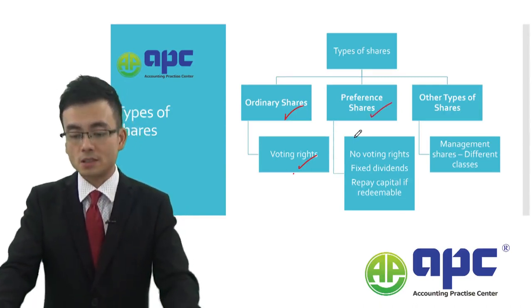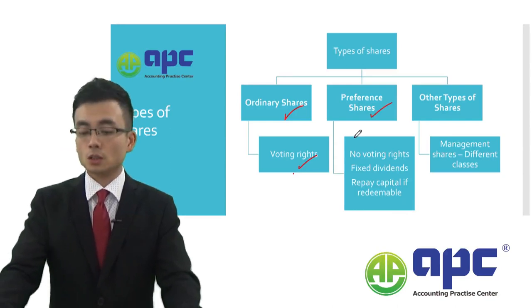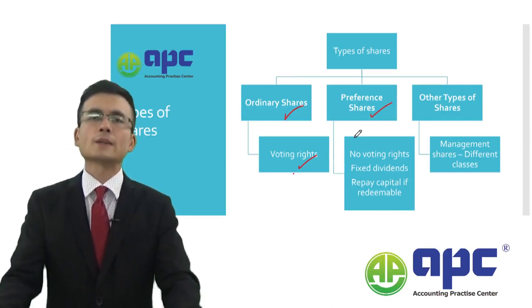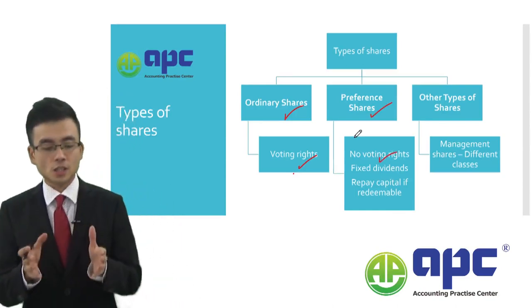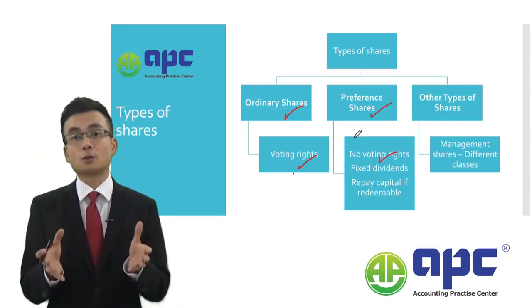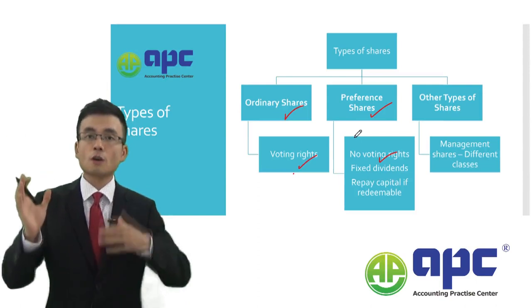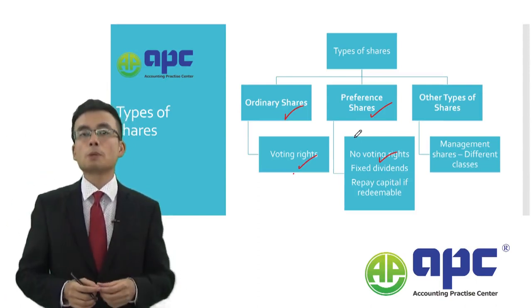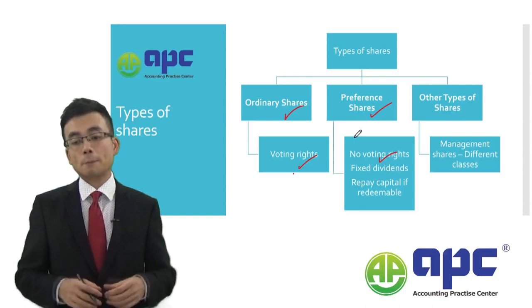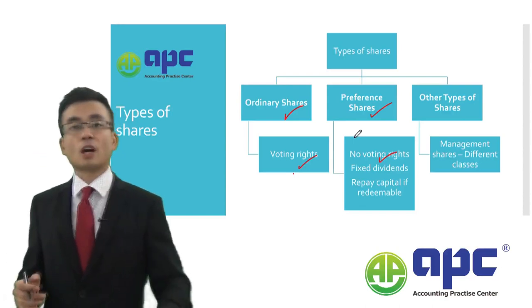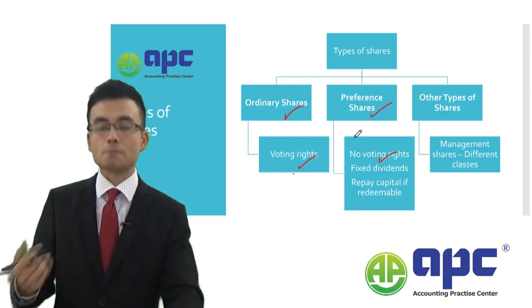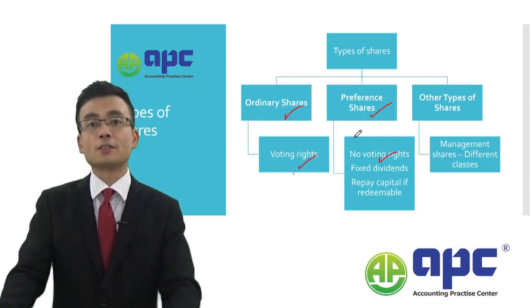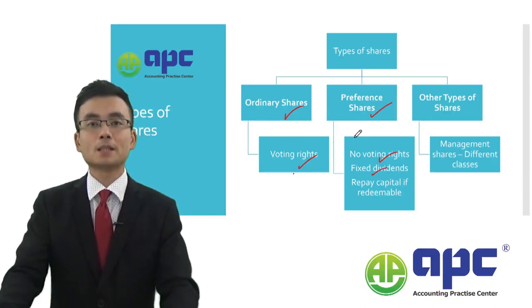When a business issues preference shares, the shares usually carry no voting rights. That means if you buy those shares, you can't attend the annual general meeting and vote for or against the board's proposal. But if you're buying the preference shares issued by the company, you may get a fixed dividend.